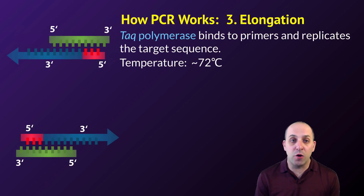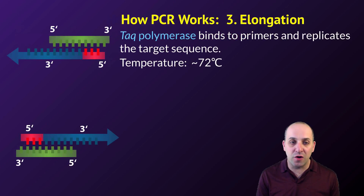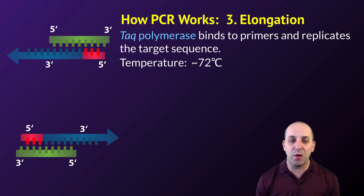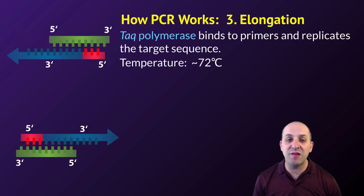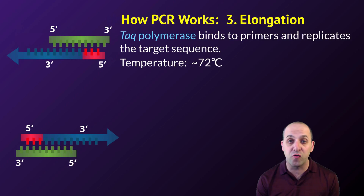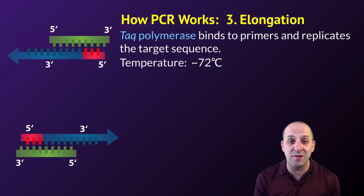In step three, Taq polymerase attaches to the primer and then replicates the target sequence. It continues until it gets to the end of the target sequence, at which point it simply falls off the molecule. The elongation step happens at a temperature of 72 degrees Celsius — much hotter than most normal polymerases can withstand, but the normal working temperature for Taq polymerase.